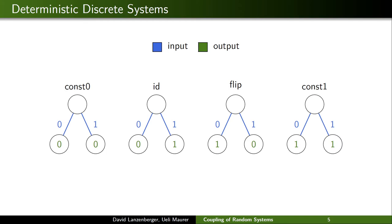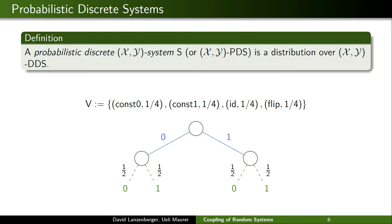The way we want to think about probabilistic systems is by saying that a probabilistic discrete system is simply a probability distribution over deterministic discrete systems, so over DDSs. For example, we can define PDS v, which is just the uniform distribution over the four DDSs we saw in the previous slide. If you look at the behavior of this PDS v, we see that no matter what we query — 0 or 1 — the answer will be a uniform random bit. So with probability one-half we see 0, and with probability one-half we see 1.